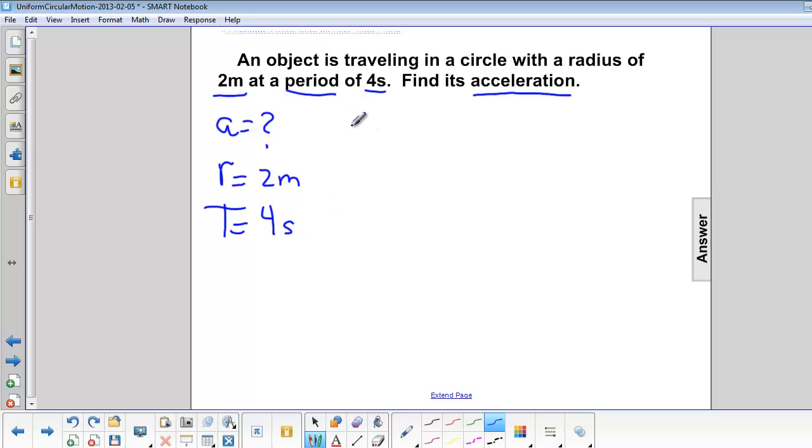Since it's in circular motion we know that velocity is going to be equal to 2πrf or velocity will equal 2πr over the period.